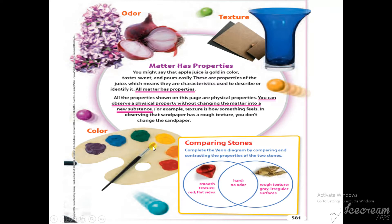You can observe a physical property without changing the matter into a new substance. I don't have to change the ice cube to water to tell its property. You don't have to change a matter to say the physical property. For a physical property, I can say directly — tell me the physical property of this brush. You will say it's black in color, the brush has hair inside, the hairs are soft. So this is how you explain the physical properties.